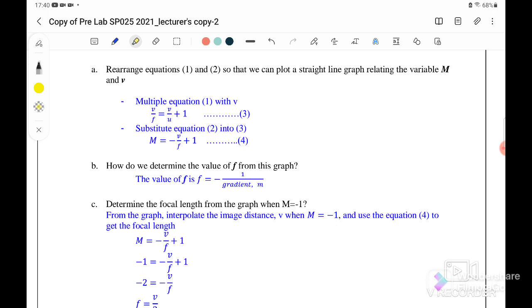Rearrange equation 1 and 2 so that we can plot a straight line graph relating to the variable M and also v. If you substitute inside, the final answer that you will get is M equals negative v over f plus 1. So this is the equation that later we will use to plot the graph. How to determine the value of f from the graph? So from the equation just now, M equals negative v over f plus 1.